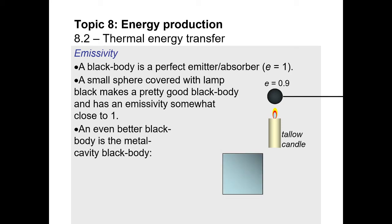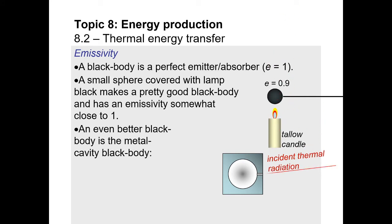An even better black body — the closest approximation we can get to an ideal black body — is when you have a cavity inside a piece of metal. You have some kind of opening and a little cavity. When radiation enters — say infrared radiation, heat — it's going to bounce around this perfect circular cavity, heat up the walls, and then the radiation is going to be re-emitted. This is actually the ideal example of a black body.